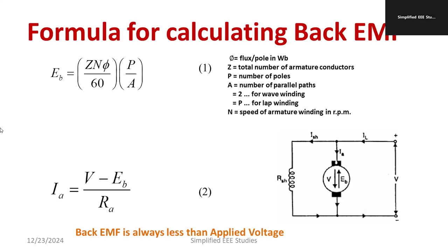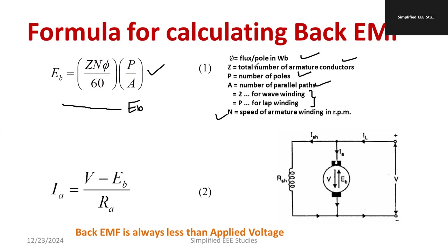What is the equation for calculating the back EMF? We can refer to this equation: Eb = (φ × Z × N × P) / (60 × A). This is the general equation for calculating back EMF, Eb. The parameters are: flux (φ), Z (armature conductors), P (number of poles), and A (parallel paths). The value of A depends on the winding — A equals 2 for wave winding, and A equals the number of poles for lap winding. N is the speed of the armature winding.